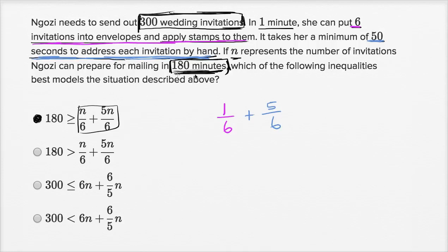And then if she's doing n invitations, this is per invitation, and then you multiply it by n, times n. This is the total amount of time she would spend if she did n invitations. And so this thing right over here has to be less than or equal to 180. We could say less than or equal to 180, or we could write that 180 is going to be greater than or equal to that.